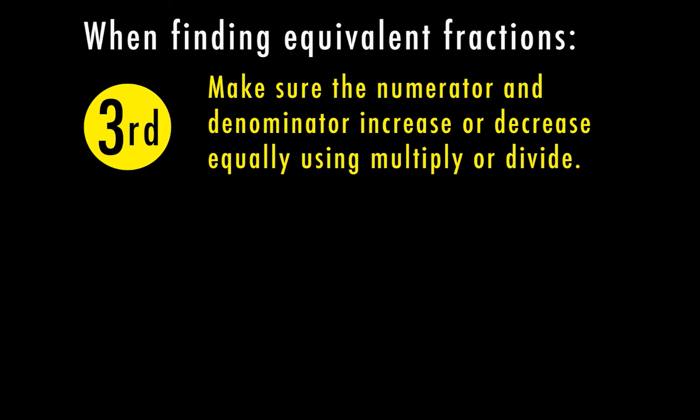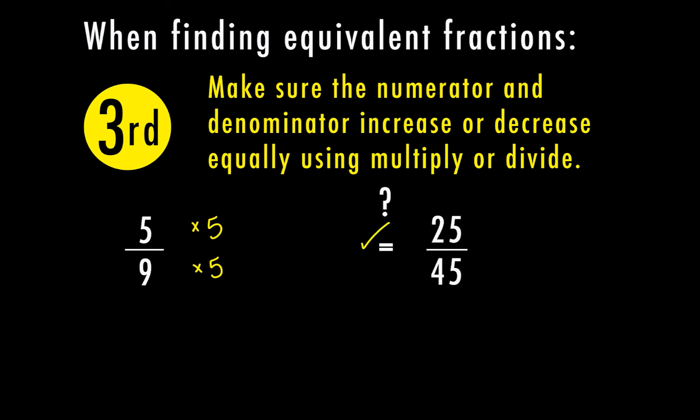For the third step, when we're finding equivalent fractions, we want to make sure the numerator and the denominator increase or decrease equally using multiply and divide. So far we've covered reducing fractions by dividing the top and bottom by the same thing, but we can also go the other direction and multiply the top and the bottom by the same number. For example: is 5 ninths equal to 25 over 45? 5 goes into 25 by multiplying times 5, and 9 times 5 is 45 — yes. So these are equivalent fractions because 5 ninths multiplied by 5 over 5 equals 25 over 45.